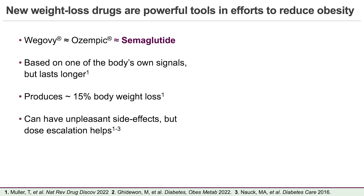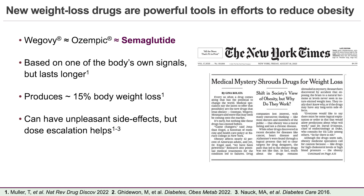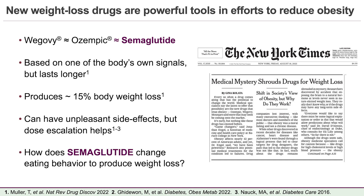There are some gastrointestinal side effects with semaglutide, so people start with a really small dose and increase it over a long period of time to the maximum dose to reduce those issues. But surprisingly, we don't fully understand how semaglutide works. So I wanted to know: how does semaglutide change eating behavior to produce weight loss?